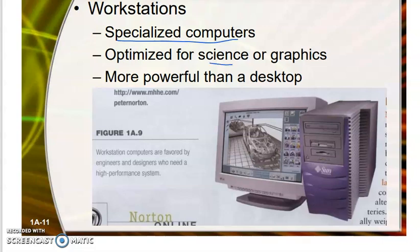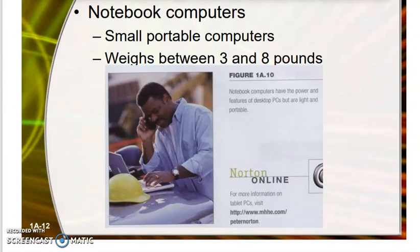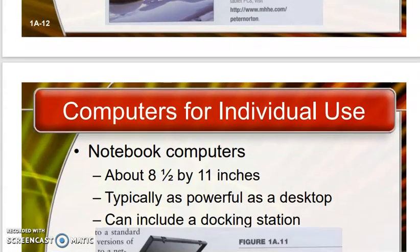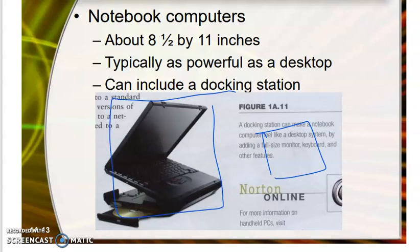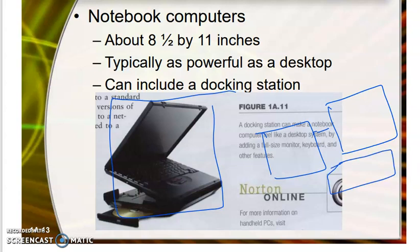The second category is the workstation, which is a specialized or optimized computer for science or engineering applications, with more power than a desktop computer. The next category is notebook computers. The main advantage is that they are portable — we can carry them. The weight is typically 3 to 8 pounds. The typical size is 8.5 by 11 inches for the screen. A docking station allows us to connect the laptop to a larger display and keyboard when needed.